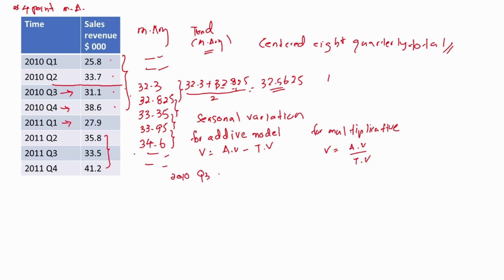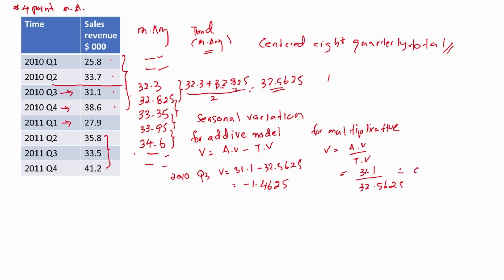For the additive model, the variance equals 31.1 minus 32.5625, which gives a negative value — the variation is negative 1.4625. Using the multiplicative model: 31.1 divided by 32.5625 gives a variance of 0.955. This is a relative value, which equals 95%. We can simply multiply this value by 100 to get the percentage.